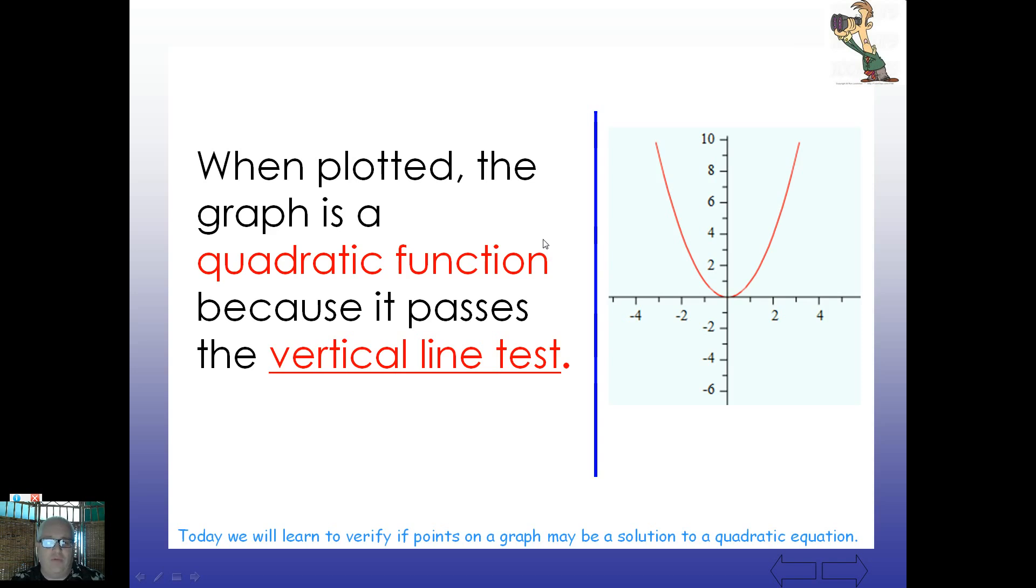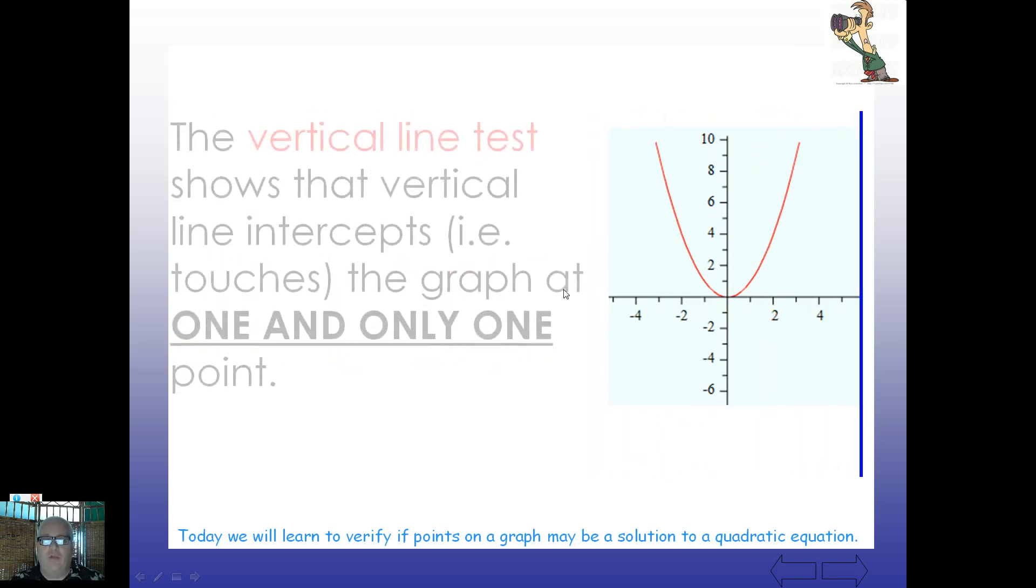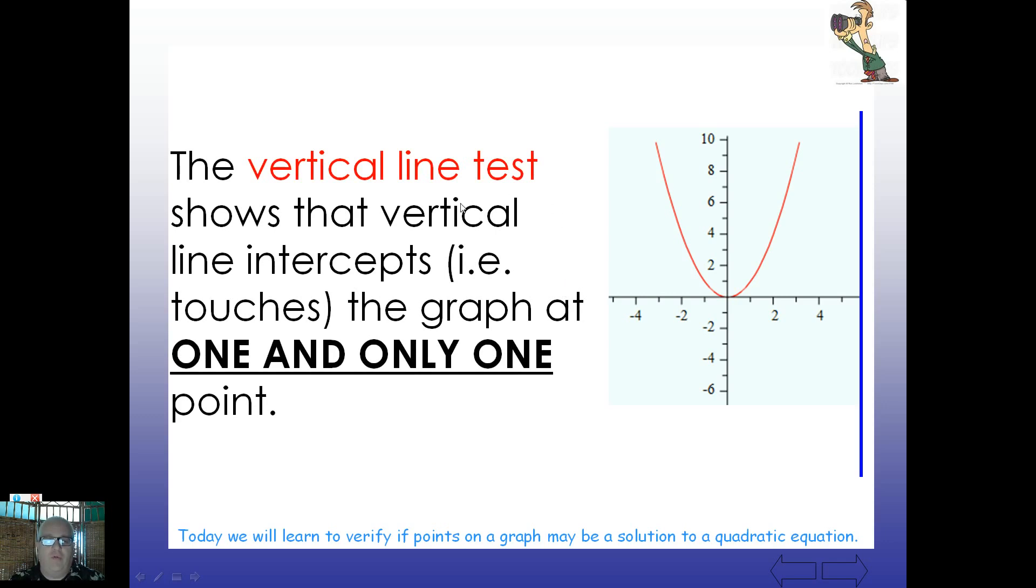Vertical line test is actually quite simple. If you'll notice what happens here with the blue line. We're just going to pass the blue line through the function. The vertical line test shows that the vertical line intercepts or touches the graph at one and only one point. So you'll notice right here the blue line stops. It hits the graph at one point.